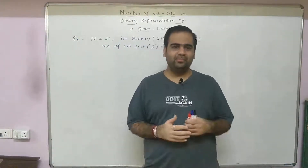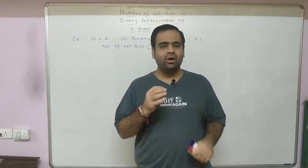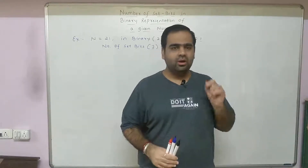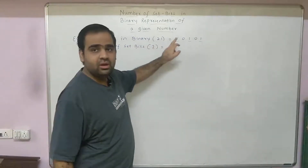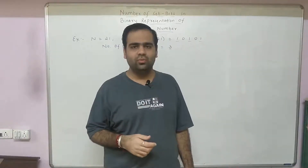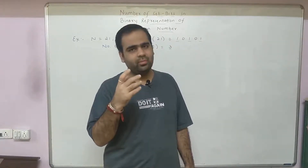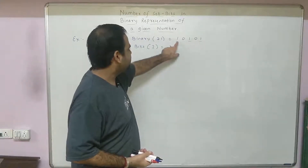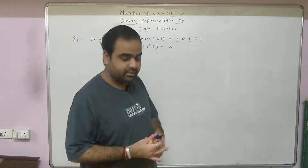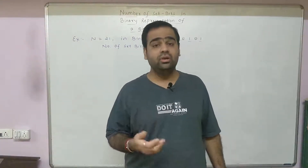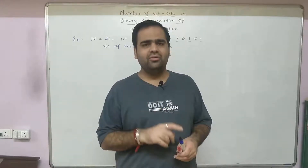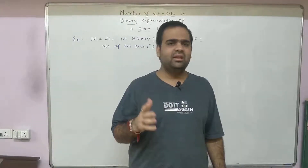Let us see a program on how to find the set bits in a given number. If a number is given as 21, we convert it into binary: 10101. We need to find the number of set bits — there is the first set bit, second, and third — therefore the number of set bits equal to 1 is 3.